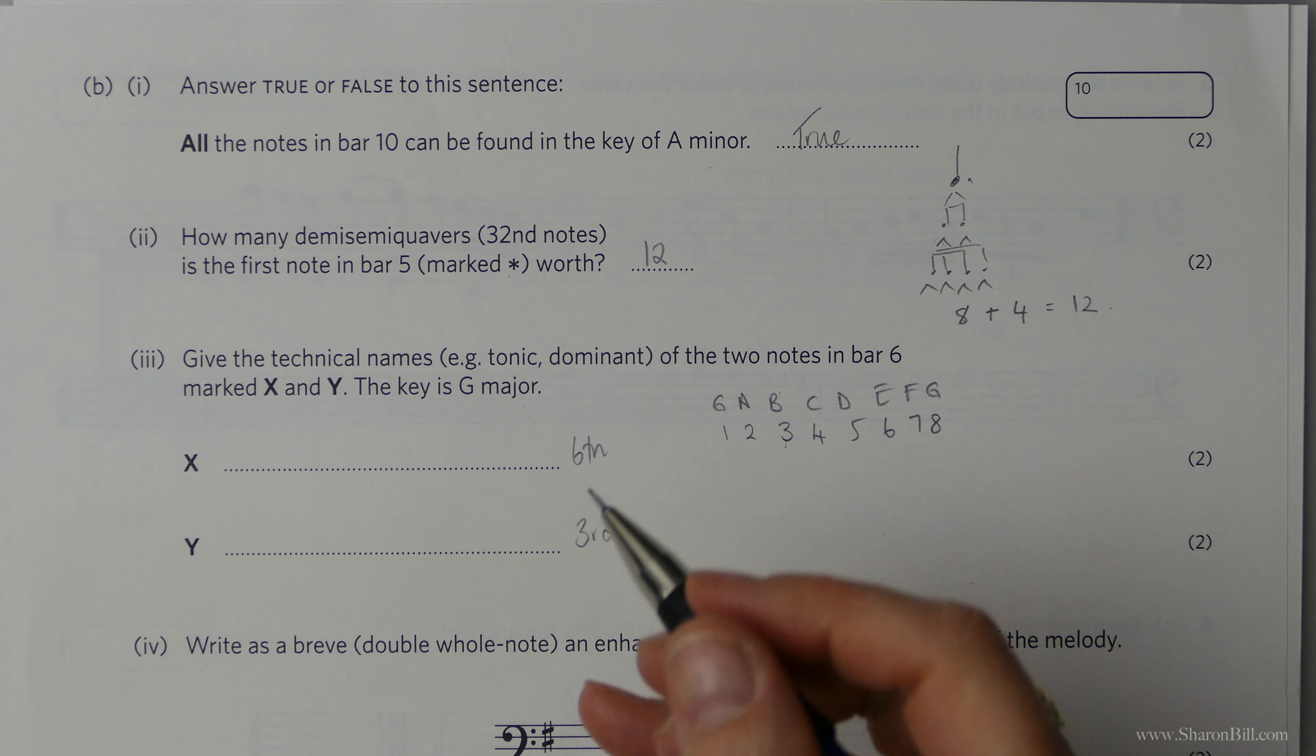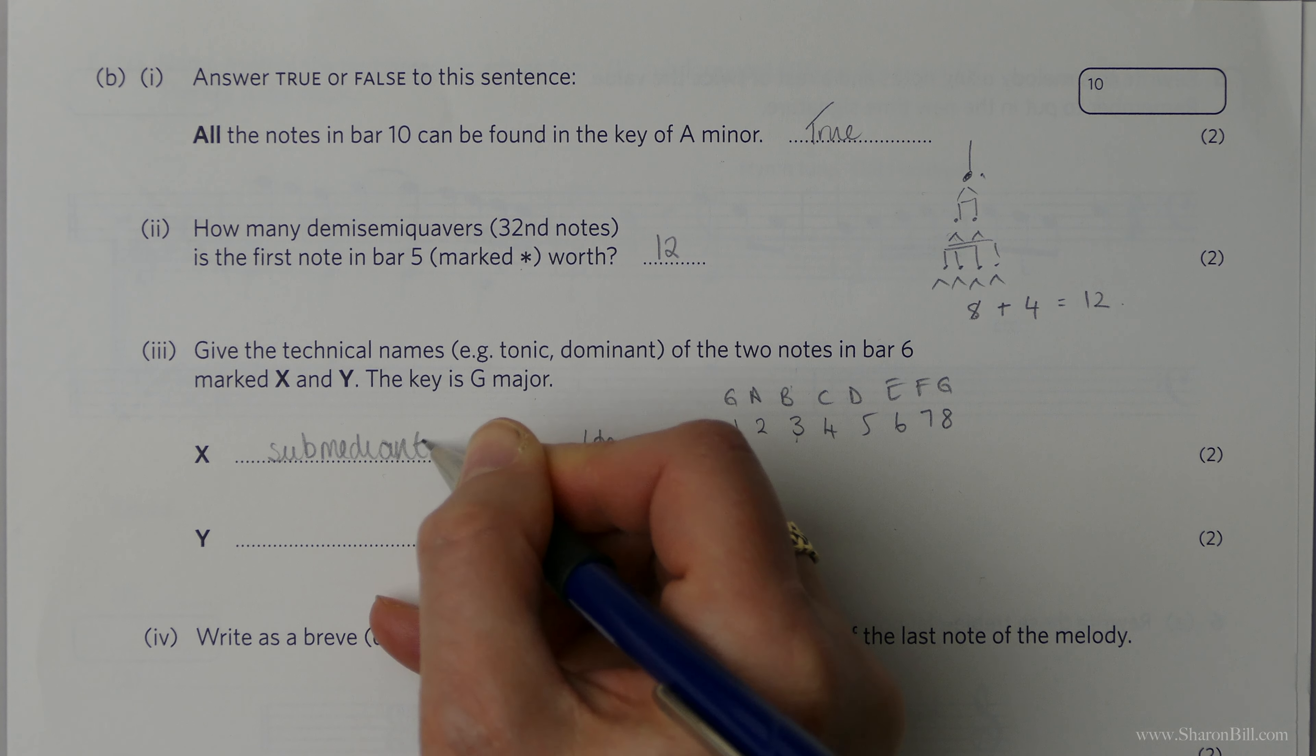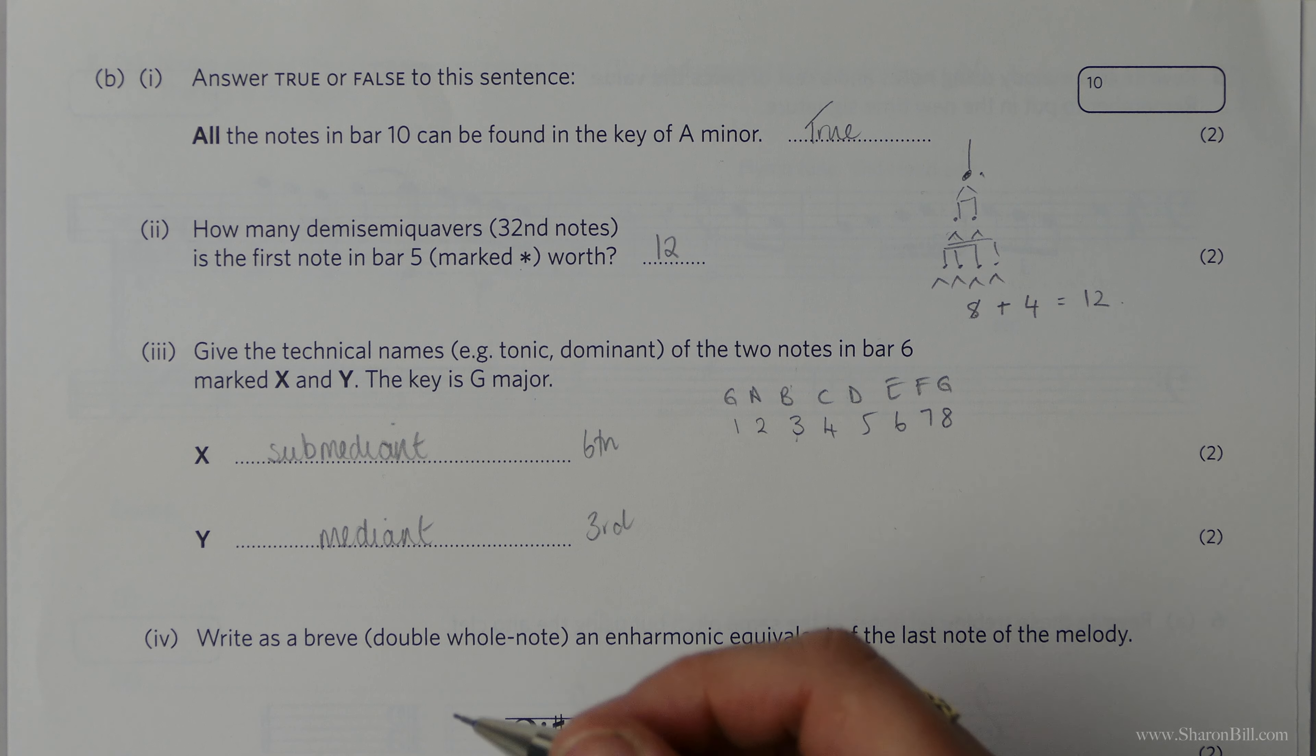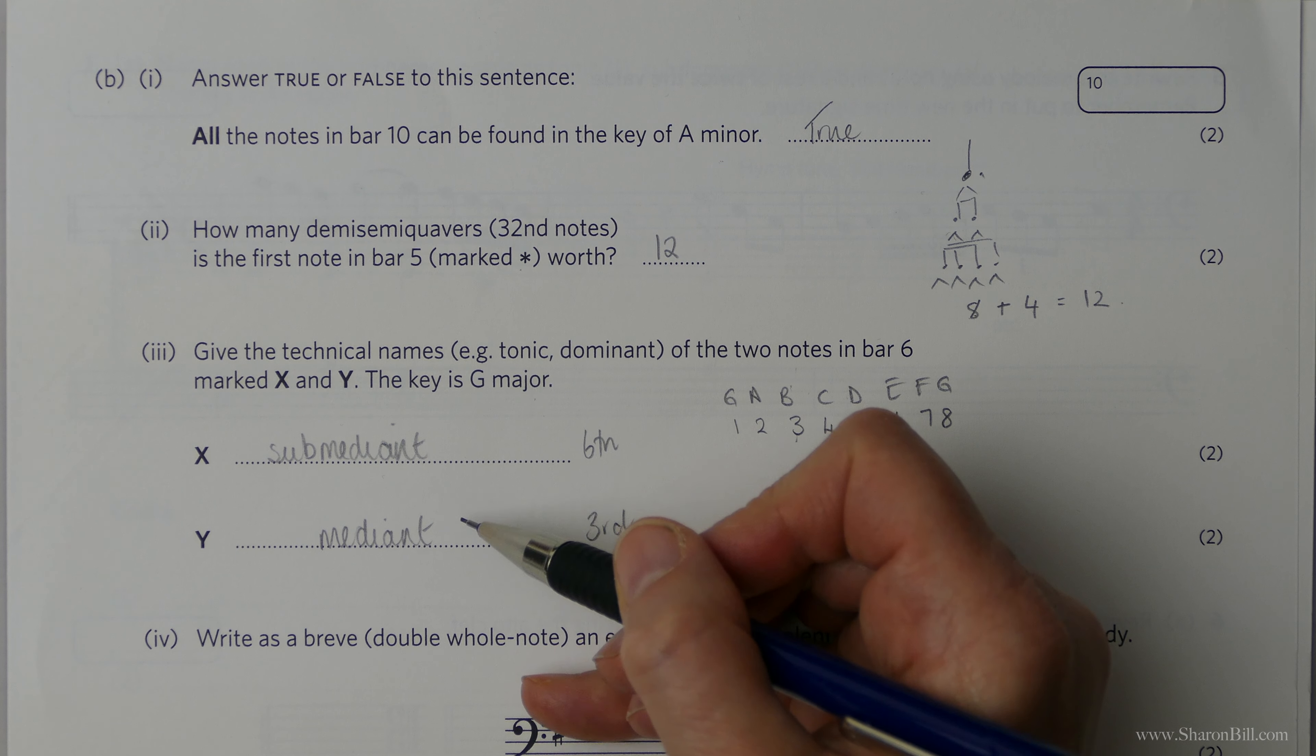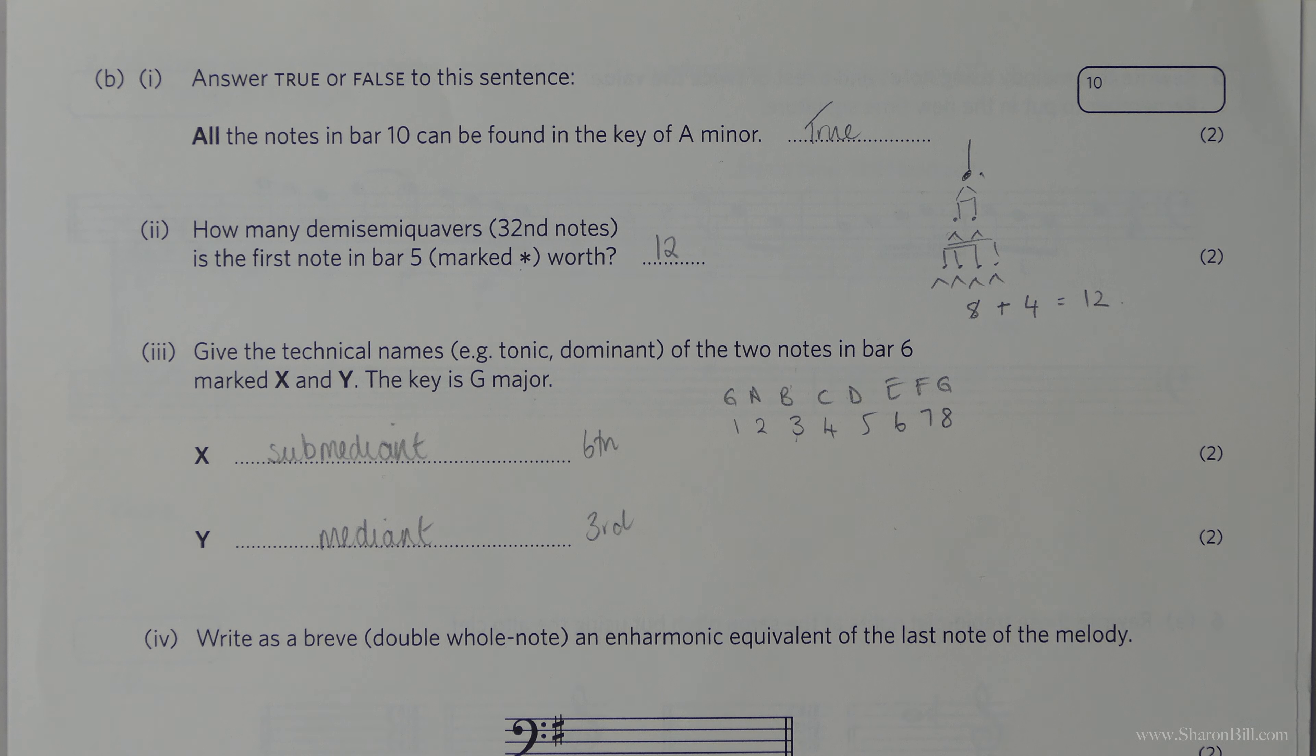So now we need to give the technical names. So the sixth degree of the scale is the submediant. Just need a bit of revision for that. And the third is the mediant. And if you want to know why they are called that, if you look in the playlist, Music Theory for Everyone, and look at the video, which explains the technical names for the degrees of the scale, just to show why that is the way that it is. If you want to do a little bit more research and revision on that, do go and look at the playlist, Music Theory for Everyone, and find the technical names for the degrees of the scale there.